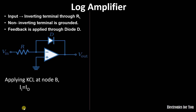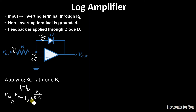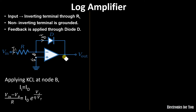Returning to our circuit: let this voltage be V_b and this voltage be V_a. The input current is I_i and the feedback current is I_d, which equals I_0 · e^(V_f / η·V_T). I_i can be calculated as V_in minus V_b divided by R. The forward voltage of the diode V_f is given by V_b minus V_out, that is V_b minus V_o.